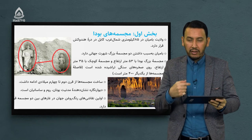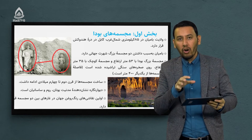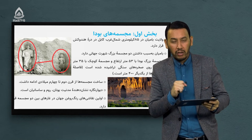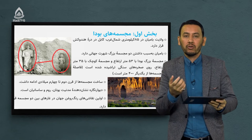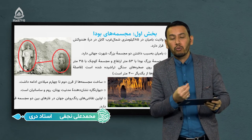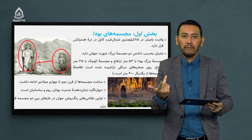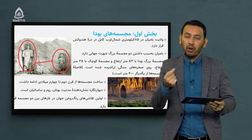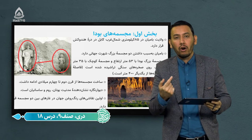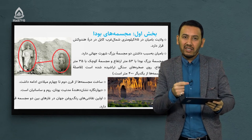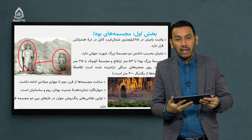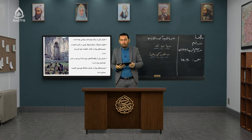اولین نقاشی‌های رنگ روغن جهان در غارهای بین دو مجسمه قرار دارد. در داخل غارهایی که اطراف همین مجسمه‌ها قرار دارند، باستان‌شناسان وقتی وارد شدند، نقاشی‌های بسیار متعدد و مختلفی یافتند. جالب‌تر اینکه این نقاشی‌ها با رنگ روغن آغشته شده‌اند و نخستین نقاشی رنگ روغن جهان در این نقطه کشف شده است.